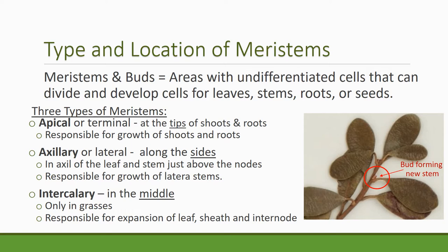These are the same thing — undifferentiated cells, meaning they are just the blank of a cell. They haven't become something specific like a leaf, stem, root, or seed, but they could develop into a differentiated cell. There are three basic types of meristems in any plant. There's an apical meristem, which is at the apex or terminal — so they're at the tips of the shoots and roots, and they're responsible for shoot and root growth. There's one facing up to increase the length of a plant above the soil.